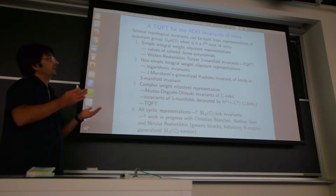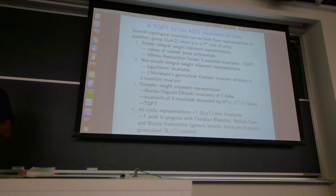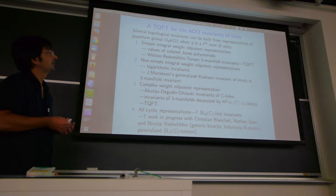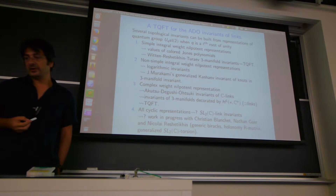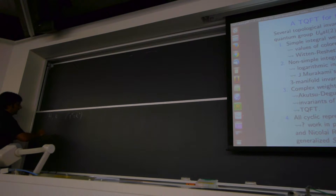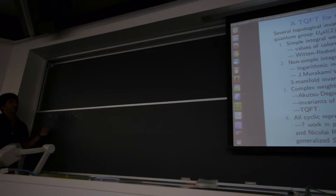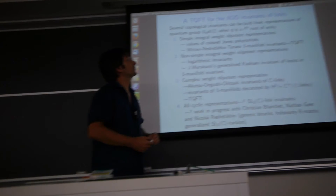There is a dichotomy for representations between those with integral weights. The weights are eigenvalues of a special Cartan element in the quantum group. When the eigenvalues of the Cartan element are integral, we say it's an integral weight representation. For nilpotent representations, the Cartan elements H and K are related by Q^{2H} = K, and the root vector nilpotent elements act in an important way. All integral weight representations are nilpotent.